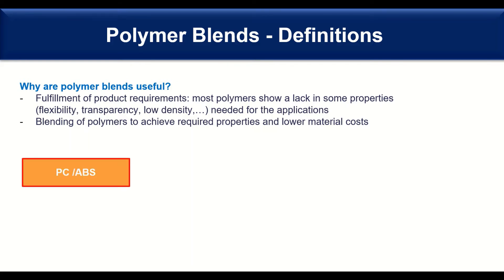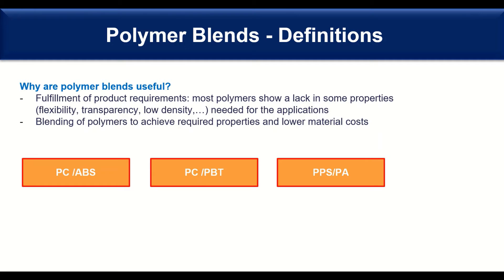Here are some examples of blends. A famous one is polycarbonate with ABS, so PC-ABS. Then we can blend polycarbonate with polyester like PBT. Then we can blend high performance polymers such as PPS with polyamide. And also here is an example where we blend three different materials: PPE, polystyrene, and polyamide.